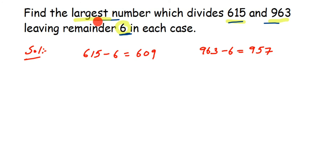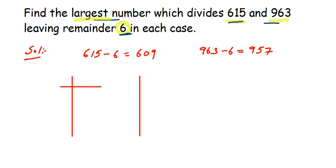There are two methods: the long division method and the prime factorization method. Here I'm going to use prime factorization — you can use long division and get the same answer. For the first number, 609, we take only prime numbers. Starting with 3: 3 times 2 is 6, bring down the 0, and 3 times 3 is 9.